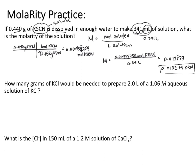How many grams of KCl would be needed to prepare 2.0 liters of a 1.06 M aqueous solution of KCl? Remember that 1.06 molar means 1.06 moles of KCl per one liter. They want to make two liters, so multiplying by 2.0 liters gives us 2.12 moles.